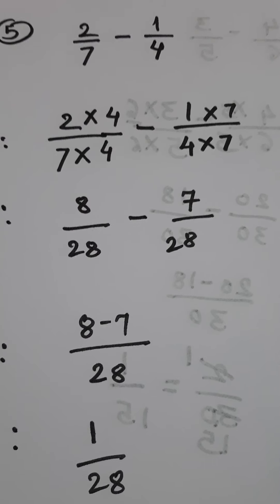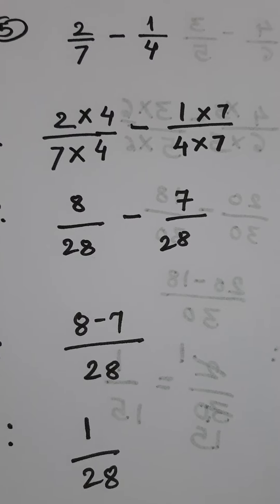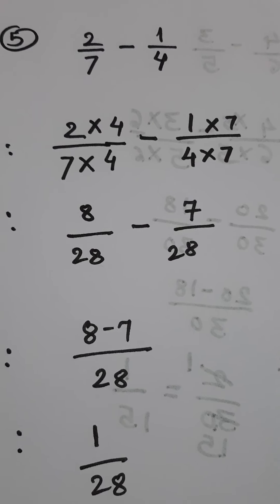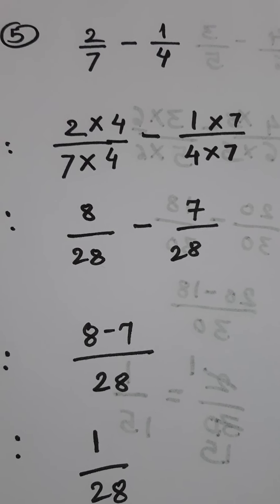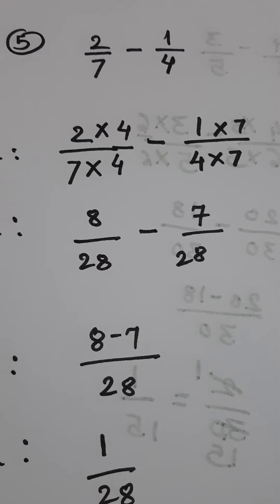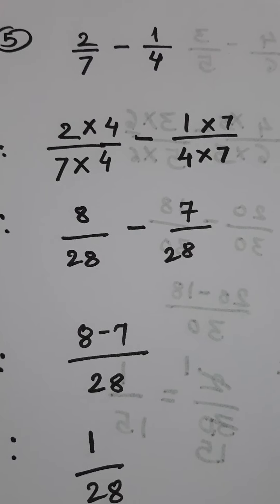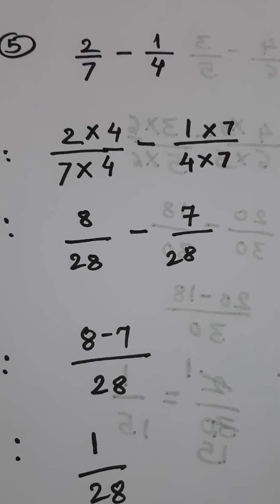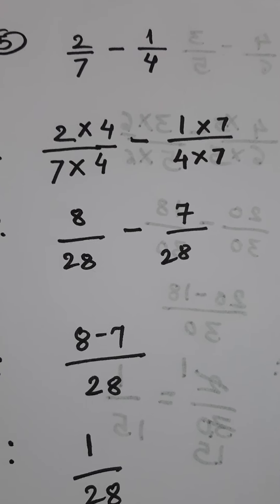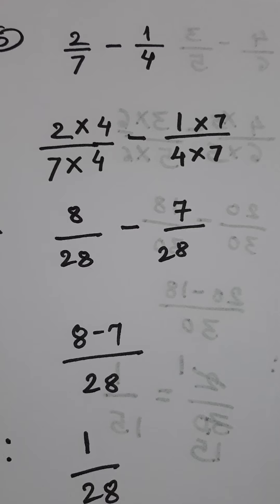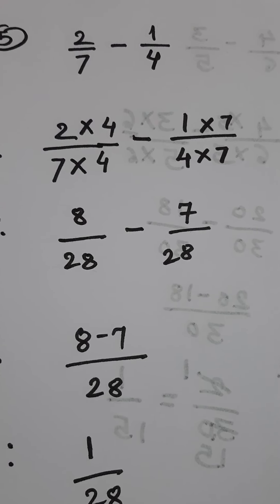Understood? You have to do more and more practice of addition and subtraction of unlike fractions. Addition and subtraction of like fractions is very simple because you don't have to change their denominators. But when unlike fractions are there, you have to convert them into like fractions, and then carry out the addition as well as subtraction. If you like my videos, please share and like them. Thank you. Have a good day.